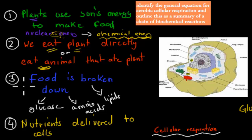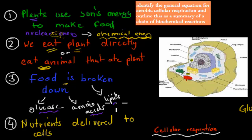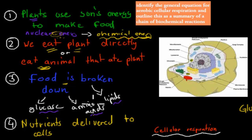The next step is that food has to be broken down into its smaller components, such as glucose, amino acids, and lipids. Glucose is your carbohydrates, amino acids make proteins, and lipids are your fats. These are the basic building blocks of many things in our body.